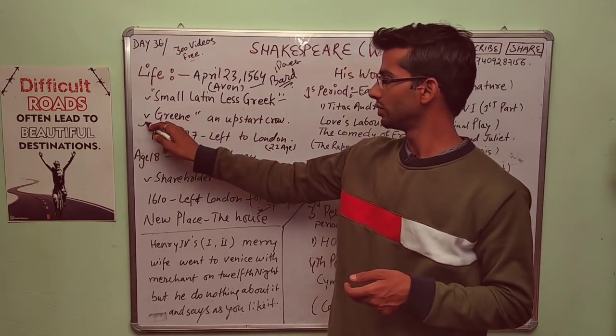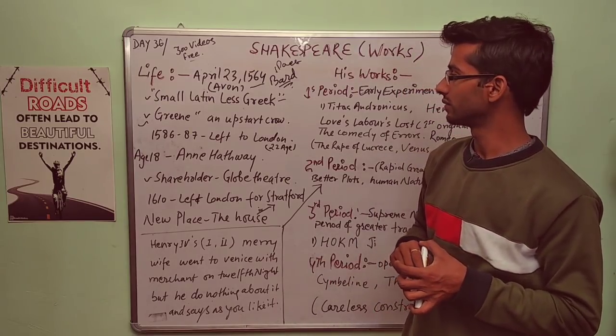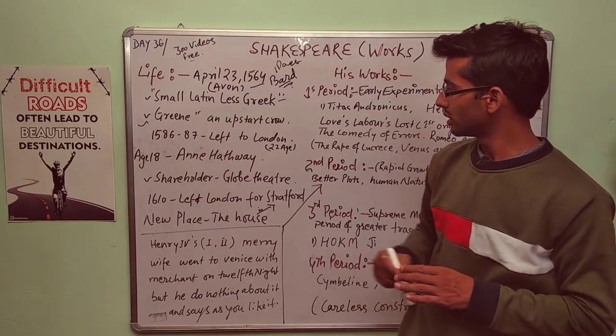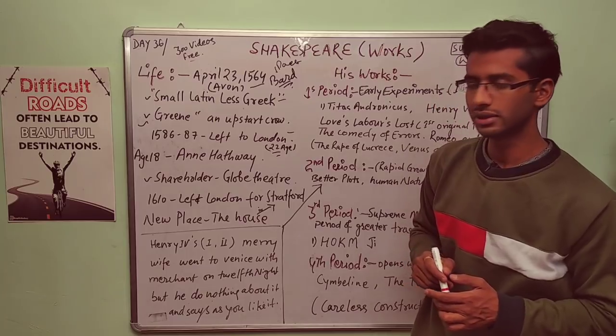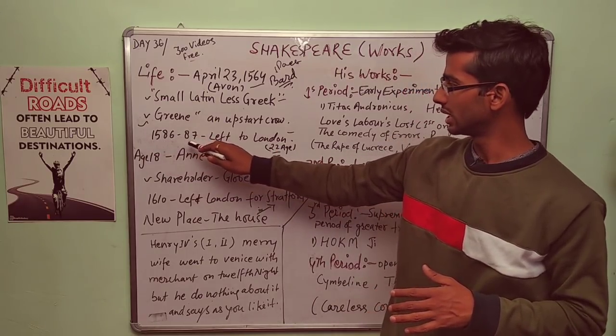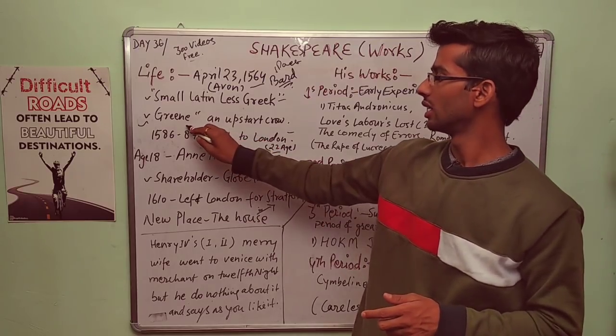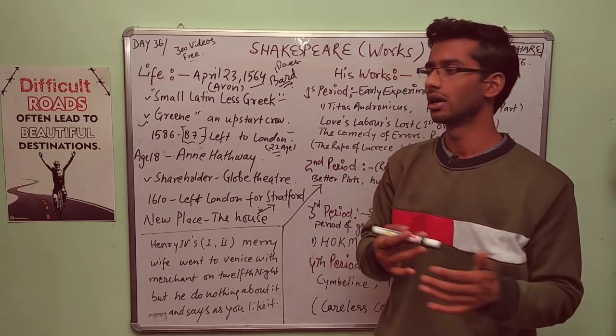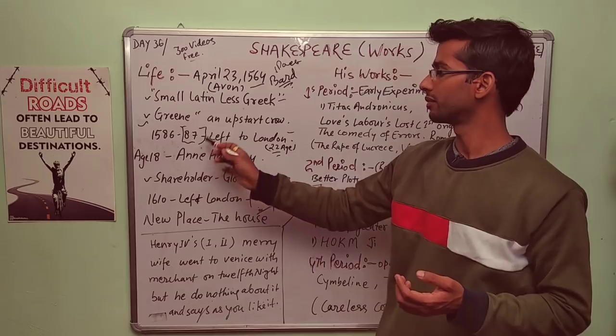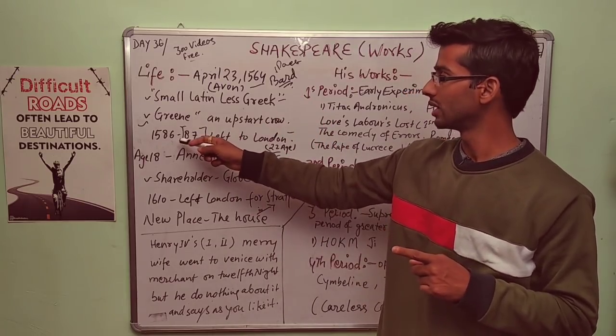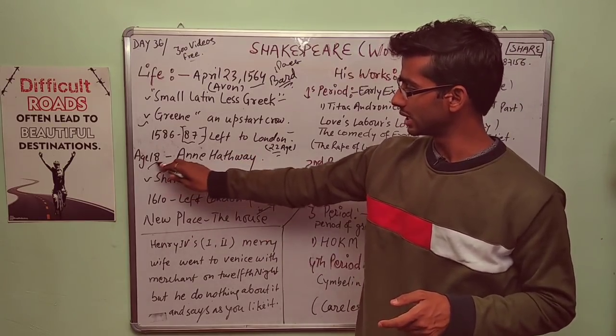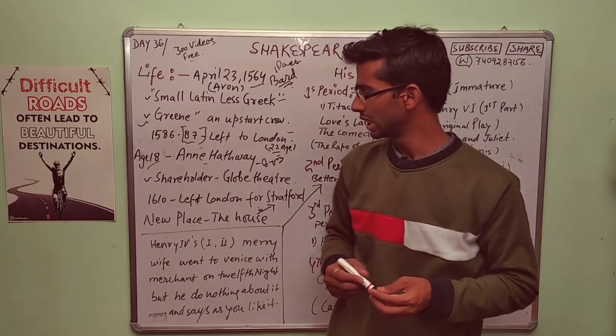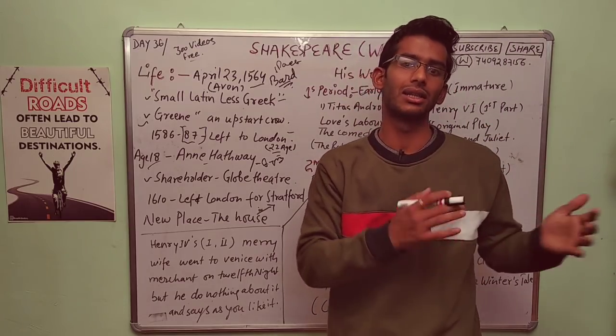Green, the university wit we talked about in earlier video. Green called him an upstart crow. He left to London when he was 22 years of age. It was in 1586-87. You can create a correlation: it was the age of Chaucer, so Chaucer wrote Canterbury Tales in that period after 87. He got married to Anne Hathaway and she was eight years older. According to some historians, his life was not happy with her.